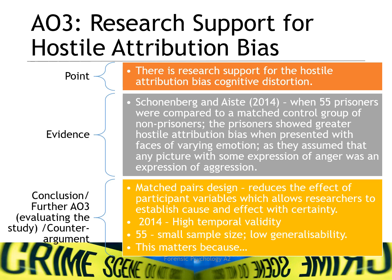However, 55 is a small sample size. This matters because the research provides support for the fact that hostile attribution bias may explain why those prisoners were in prison compared to the matched control group. It could be that they have a predisposition of irrational thinking towards hostile attribution bias.